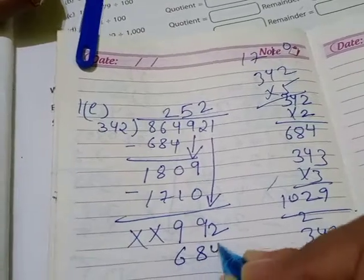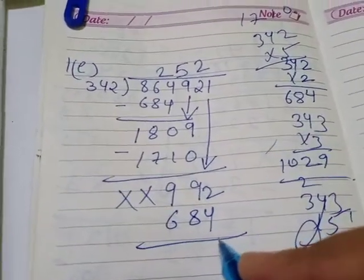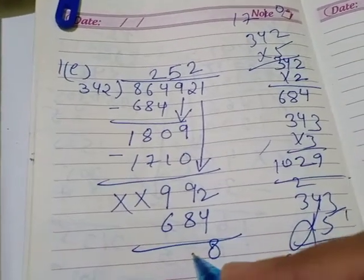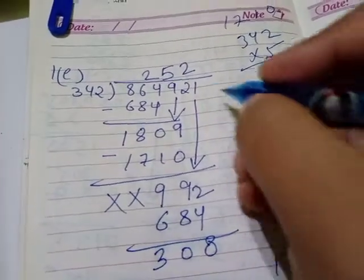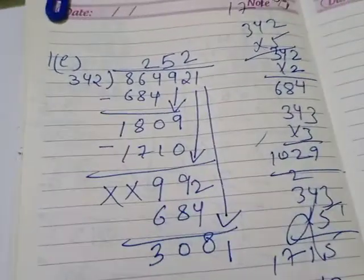That is your 684. Okay, so 12 minus 4 will be 8, then 8 minus 8 will be 0, 9 minus 6 will be 3. Okay, now we will note down this 1 here: 3081.